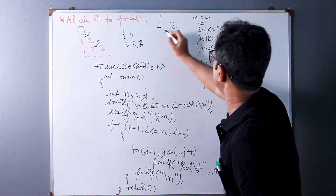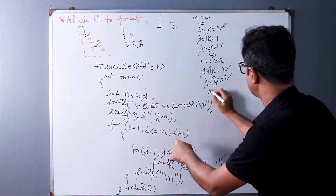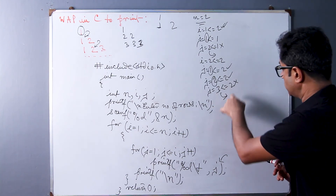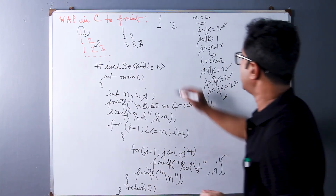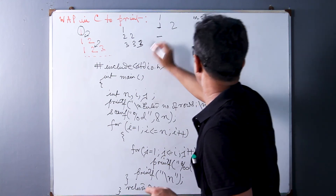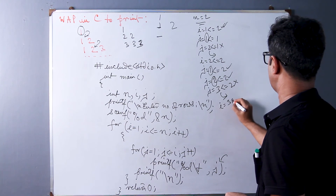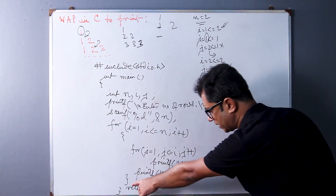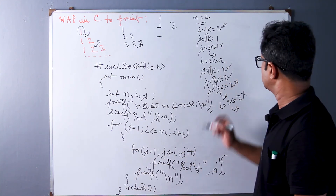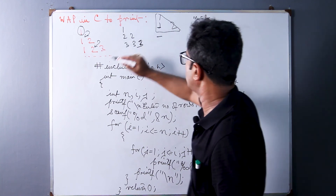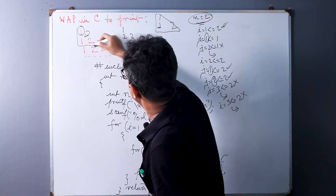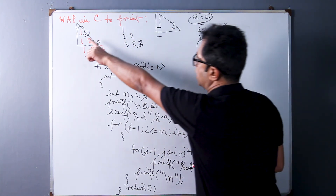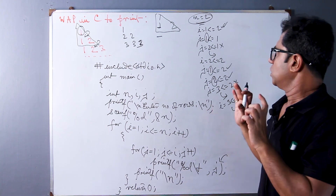We print j = 2 after a tab. Then j is incremented to 3, which is not <= 2, so we exit the inner loop and print the newline. i is incremented to 3, which is not <= 2, so we exit the outer loop and reach return 0. The output is: 1 on the first line, and 1 2 on the second line — exactly the expected pattern for n = 2. The program is correct and ready to use.